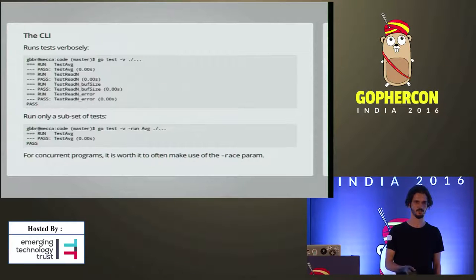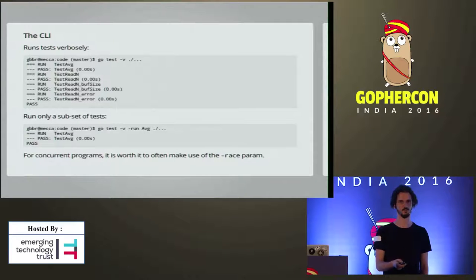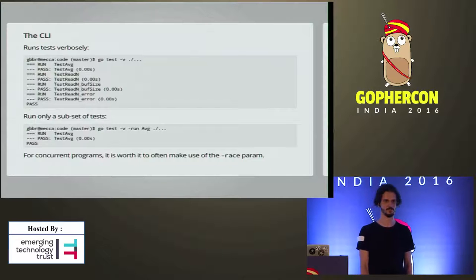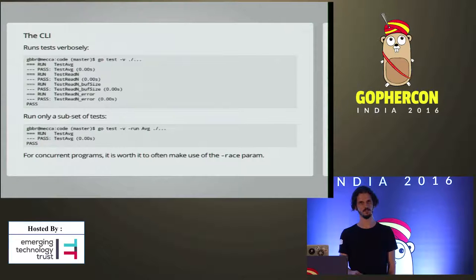For the CLI, this is how you run the tests. The -v flag gives you verbose output, and if you do ./... you will run all sub-packages as well. Another useful thing is the -run parameter, which allows you to run a subset of tests using a regular expression — in this case, running just the tests for the average function. For concurrent programs, it's worth writing tests that try to cause race conditions, and for those tests it's nice to use the -race parameter. It's very helpful.